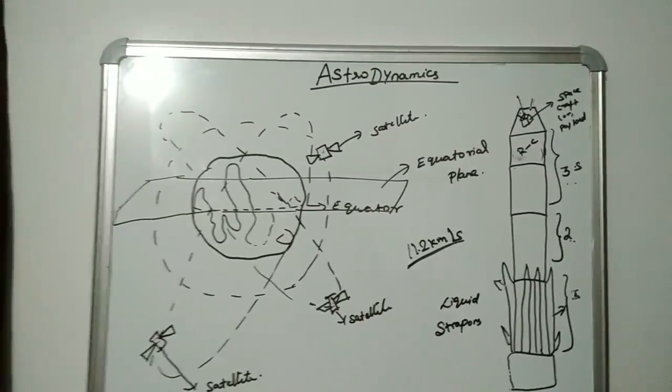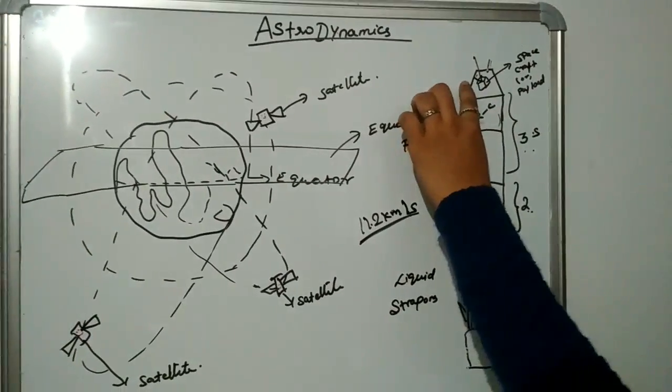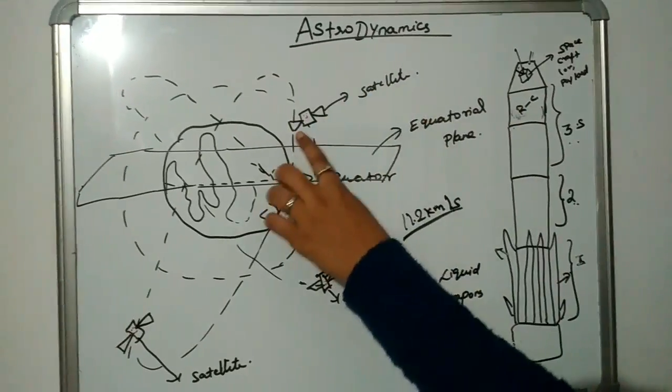So bear with my bad diagram. If it is a three-stage rocket and the satellite is in the heat shield, how is it transferred into its orbital path?